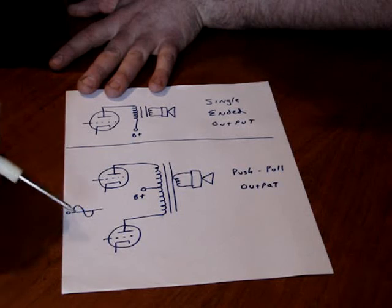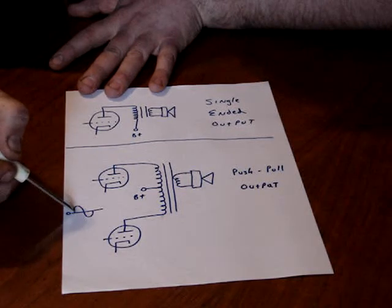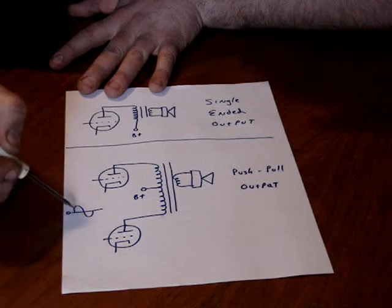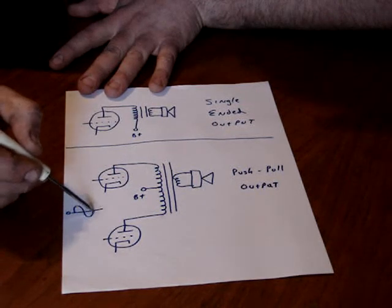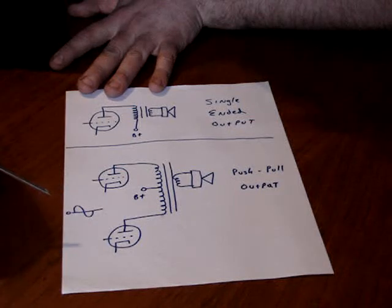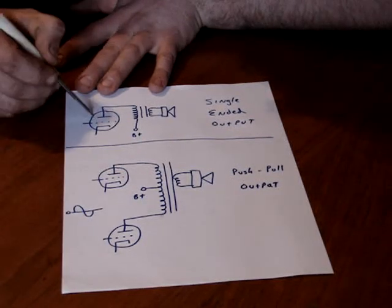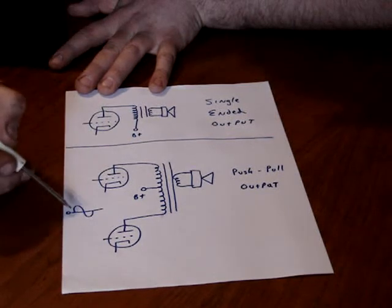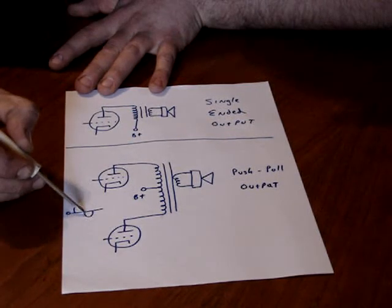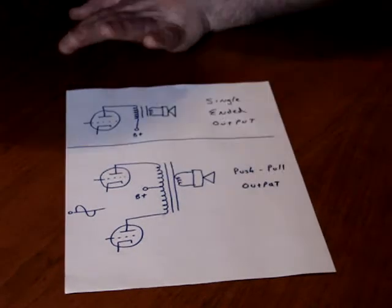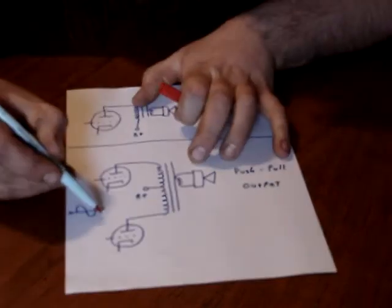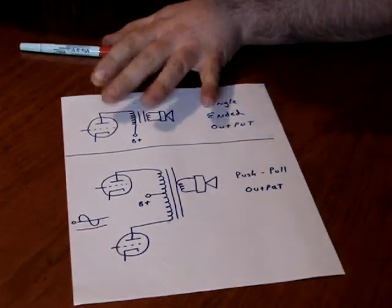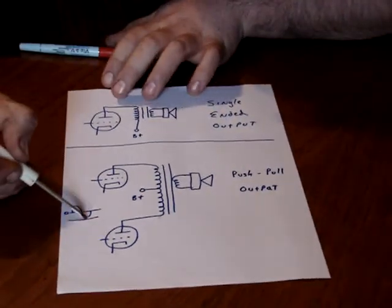Because each tube is only doing part of the work. Instead of having to go, they bias the tube differently, because it only has to conduct this portion of the wave. It doesn't have to do the negative. So, usually push-pull is class AB, not always. Usually, single-ended is class A. They have to bias it high enough so that, as it goes negative, it does not reach cutoff. The invisible cutoff line would be down here for class A. You don't want that input signal to reach cutoff, or there will be distortion.